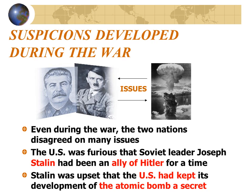The suspicions between the two nations developed before World War II, as we saw in the 1920s with the Red Scare. But even during the war, the two nations continued to disagree on many issues. The U.S. had been furious that Soviet leader Joseph Stalin had been an ally of Hitler for a short time before general war broke out. Stalin was upset that the United States had kept its development of the atomic bomb a secret.